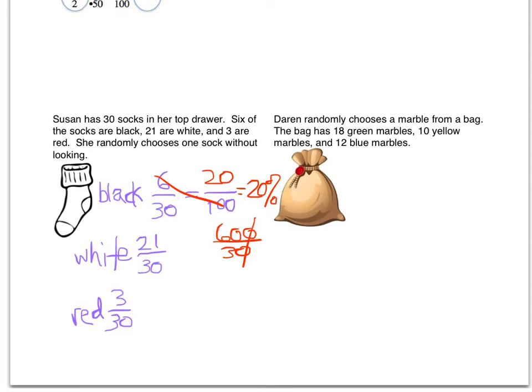Then moving on to the white socks, let's see here I'm just going to set that equal to 100 down here just so I have enough room. And again we're going to cross multiply the 21 times 100 which should be 2100.